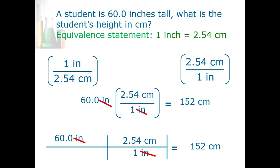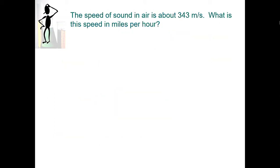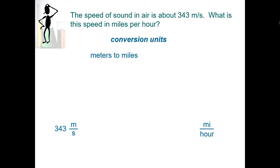Sometimes when we convert between one set of units and another, we have to do multiple steps. Let's consider the speed of sound in air. The speed of sound in air is about 343 meters per second. If you live in the U.S., that is meaningless because we're typically accustomed to measuring speed in miles per hour. So let's convert this to miles per hour. We're going to start with 343 meters per second and change all of this into miles per hour. I need to find out how to convert meters to miles — the equivalence statement is one mile equals 1609 meters.